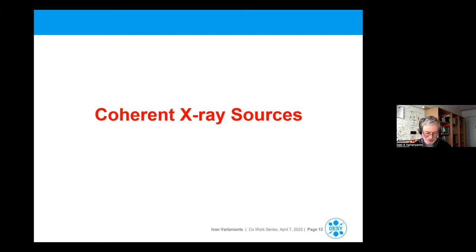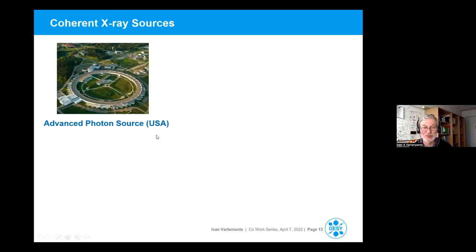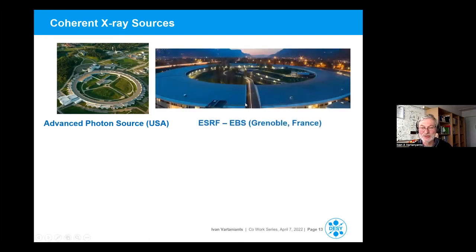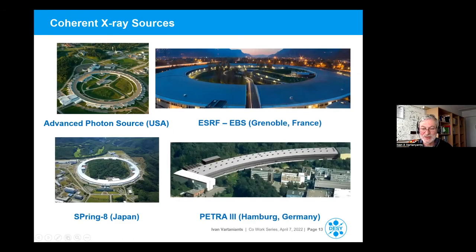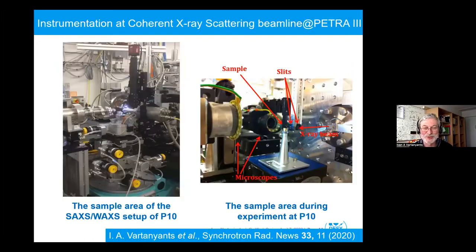Unfortunately the process is quite slow — from collecting data to real images and publication it takes two or three years. Coherent X-ray sources include APS, NSLS, ESRF, SPring-8 in Japan, and of course PETRA 3 in Hamburg and MAX IV. We do quite a bit of experiments at PETRA 3; here is the sample environment of the SAX/WAX setup at P10 and the sample area during an experiment.